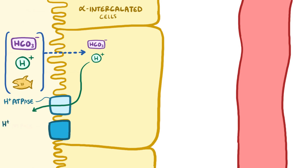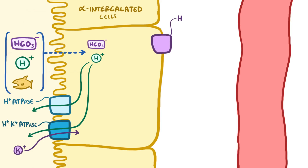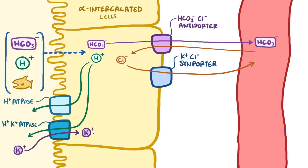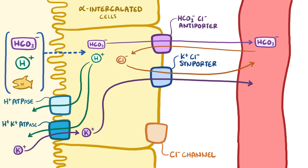Second, they have a hydrogen-potassium ATPase, which pushes hydrogen into the tubule in exchange for potassium. With regard to bicarbonate, there is a bicarbonate chloride antiporter which moves bicarbonate into the blood in exchange for chloride. To prevent that chloride from piling up inside the cell, there's a potassium chloride symporter on the basolateral surface that moves both of these ions into the blood. In addition to this, there's also a chloride channel on the basolateral surface, which allows chloride to passively move down its concentration gradient and into the blood.